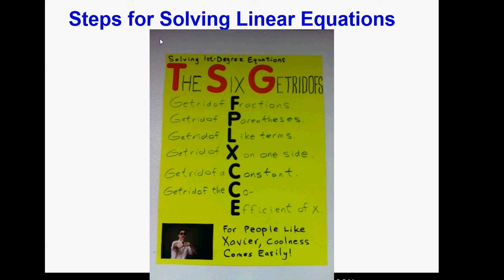Here's the Jackson six-step method for solving linear equations. Linear equations have x in them but no x squared. The six steps use the acronym FPLXCCE: For People Like Xavier, Coolness Comes Easily. That stands for: get rid of Fractions, get rid of Parentheses, get rid of Like terms, get rid of x on one side, get rid of a Constant, and get rid of the Coefficient of x. Do those things in that order and you can solve any linear equation.